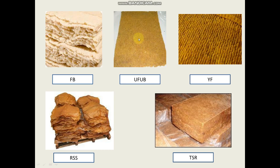Here you can see unfractionated unbleached crepe rubber, which is yellow in color. The yellow fraction rubber is a darker yellow and is a very hard rubber. RSS is a sheet rubber that is smoked and honey brown in color. TSR (technically specified rubber) consists of block rubbers mainly made from field coagula. The hardness and stiffness of TSR are much less compared to the crepe rubber types.